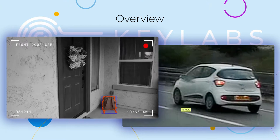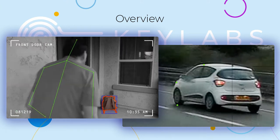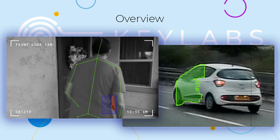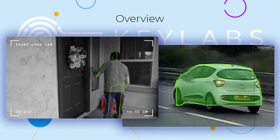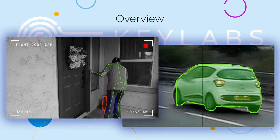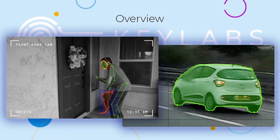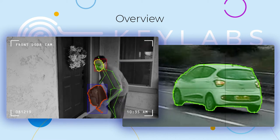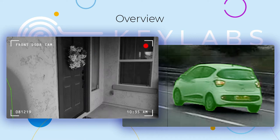The Keylabs image and video annotation tool has been built by annotation experts to deliver high performance of data annotation and management features as well as unique operations management. This video will detail the core capabilities of the Keylabs tool, from specific features to workforce analytics.